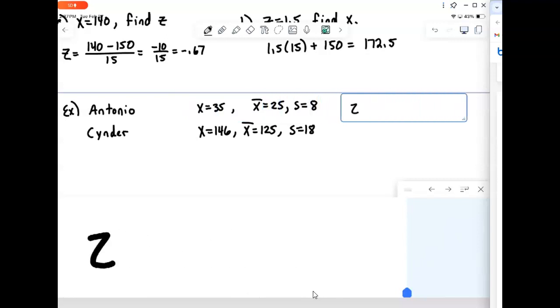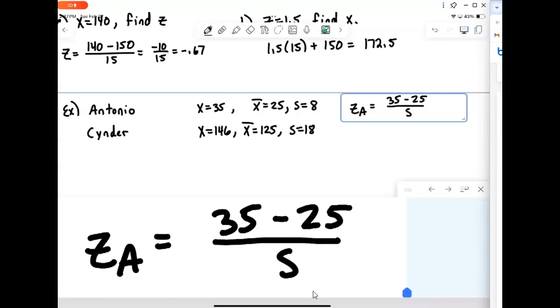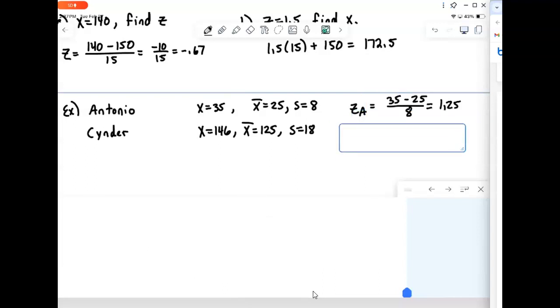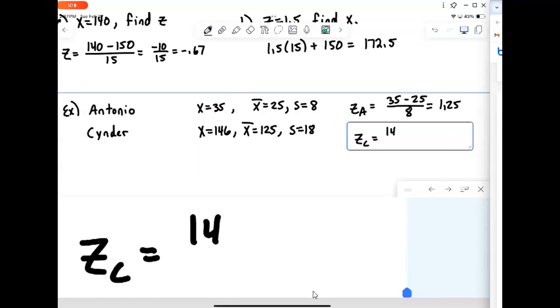And so we compute z for Antonio. We take his data value, 35, minus the mean, 25, divided by 8. And that comes out to be 1.25. So his z-score is 1.25. He's 1.25 standard deviations above the mean.